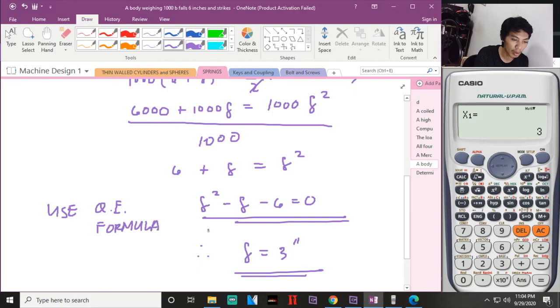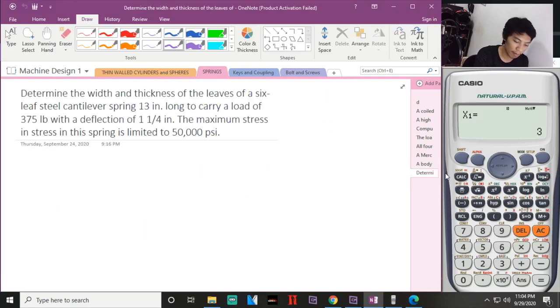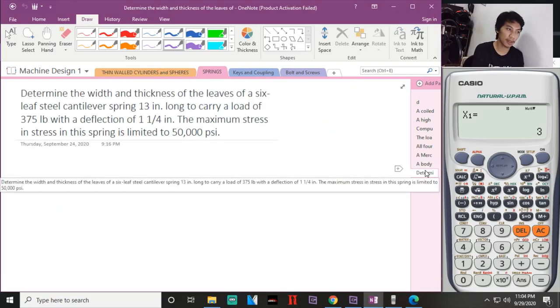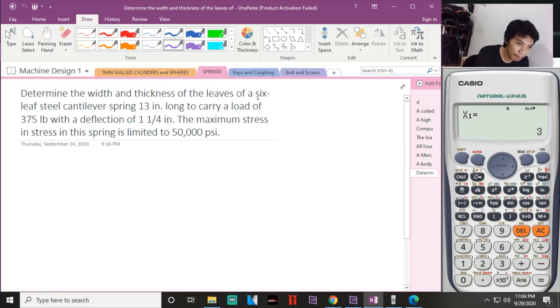Okay, for the last problem. This is a leaf spring now. Determine the width and the thickness of the leaves of a six leaf cantilever spring.